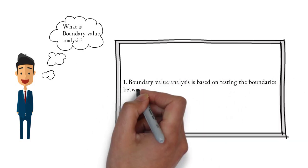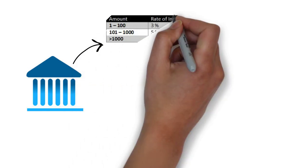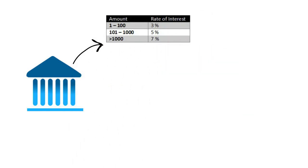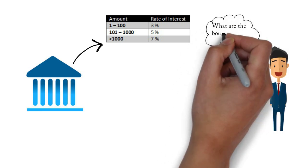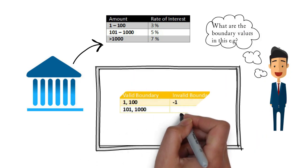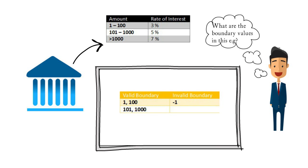We already saw the different partitions in our example using equivalence partitioning. Now we design test cases to test the boundary values of those partitions. For the partition one to one hundred, the valid boundary values are one and one hundred, and the invalid boundary value is minus one. For the partition one hundred and one to one thousand, the valid boundary values are one hundred and one and one thousand — we need to design test cases for all of these.